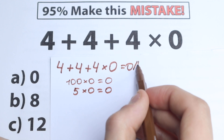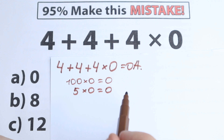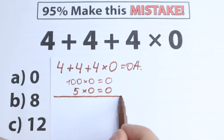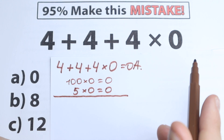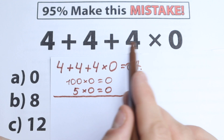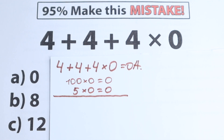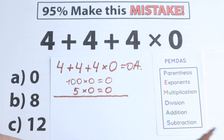So it looks like the correct answer is option A. But that's just the first approach, and I don't want to say yet whether it's correct or incorrect. Let's look at this from another perspective, because we have both addition and multiplication. We need to know the correct order of operations. Whatever order we select will create a different answer, so for this question I'll use the PEMDAS order of operations.